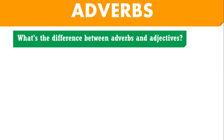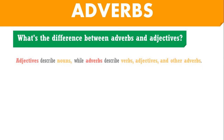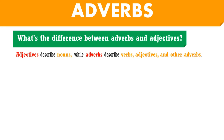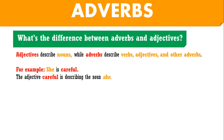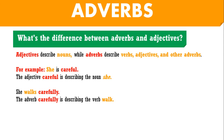What's the difference between adverbs and adjectives? Adjectives describe nouns, while adverbs describe verbs, adjectives, and other adverbs. Take the sentence: 'She is careful.' The adjective 'careful' is describing the noun 'she.' But if you said 'She walks carefully,' the adverb 'carefully' is describing the verb 'walk.'